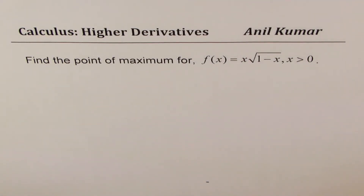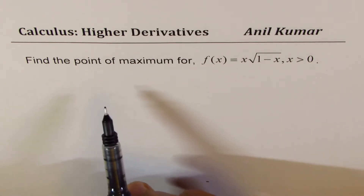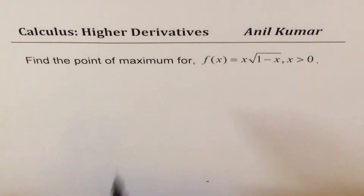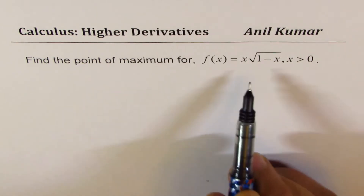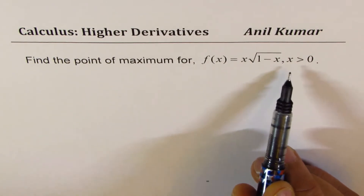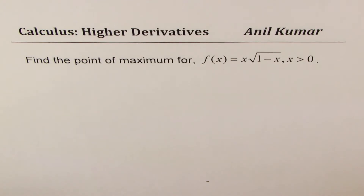I'm Anil Kumar. Let me first thank my subscribers for taking keen interest in my channel and posting excellent questions. This one is really very good — it comes from a subscriber who wants to understand the concept of finding maximum with higher derivatives. The example chosen is: find the point of maximum for f(x) = x times √(1−x), where x > 0. Another student asked a similar thing, so I hope it will help many.